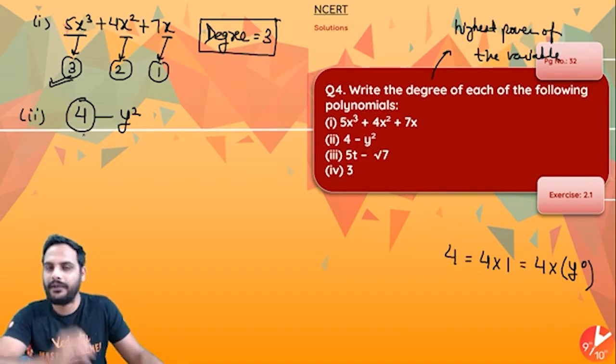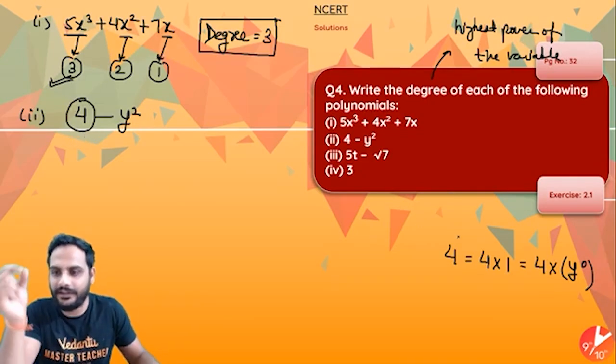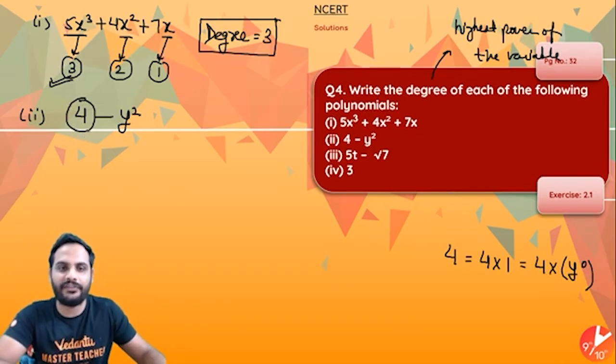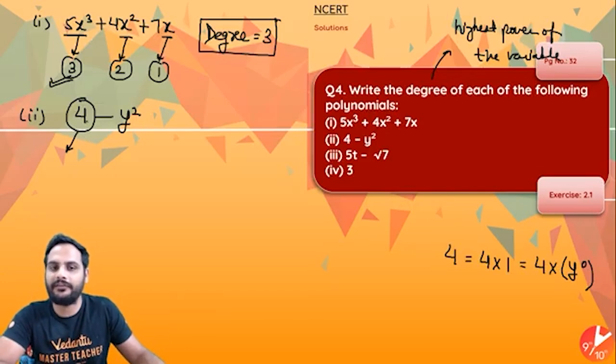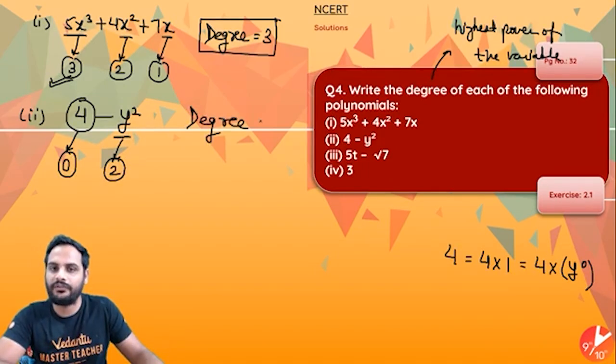If there is a constant term, the variable is hidden and the power of the variable is 0. So if the term is a constant term, power of the variable will be 0. Here power of the variable is 2, so highest power is 2, so degree is 2.